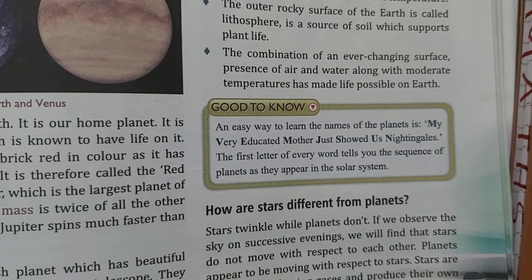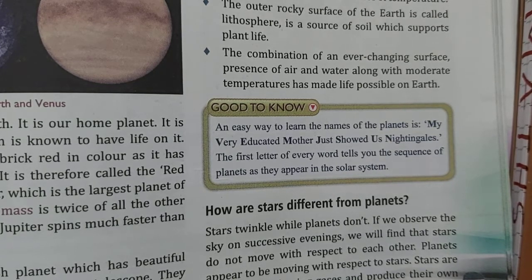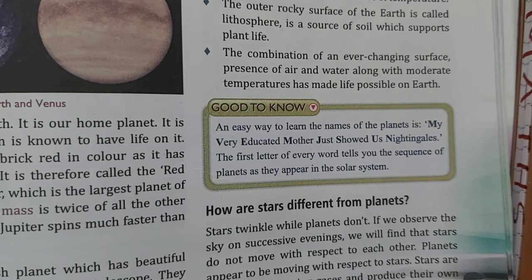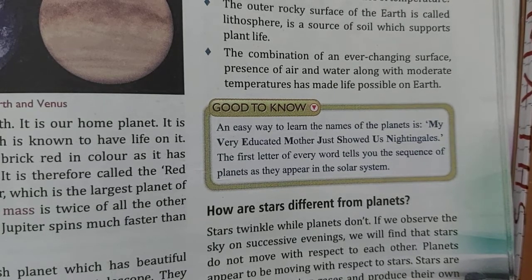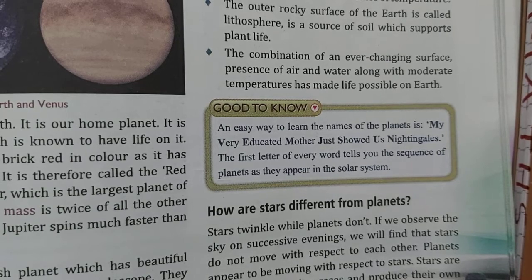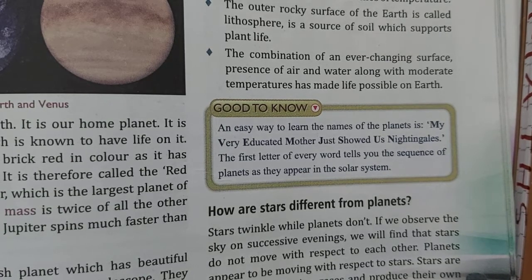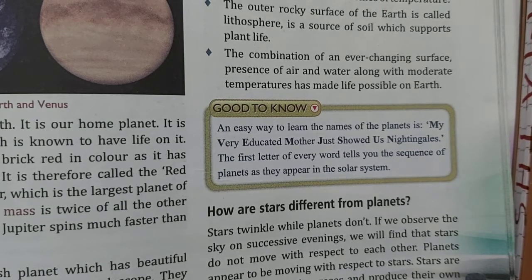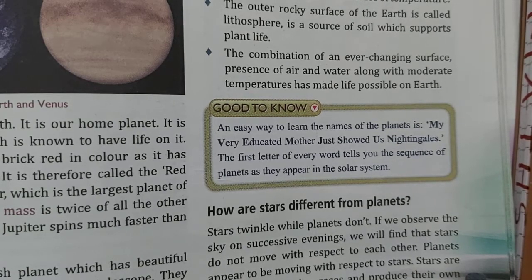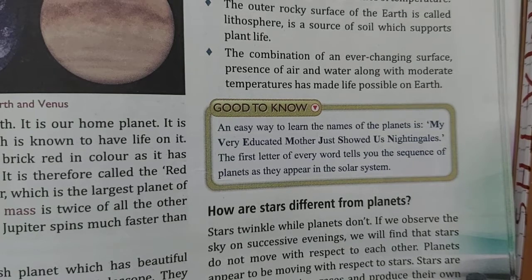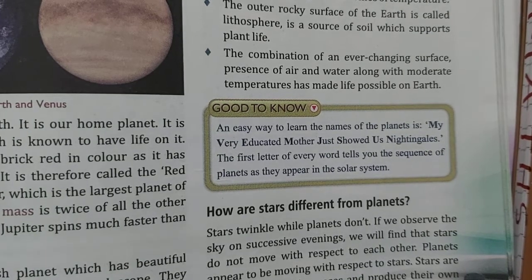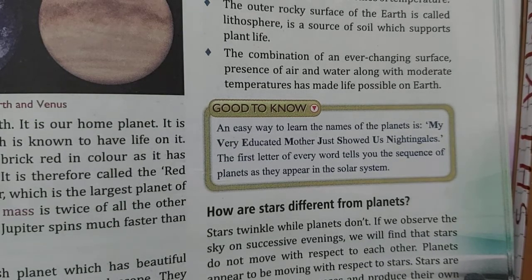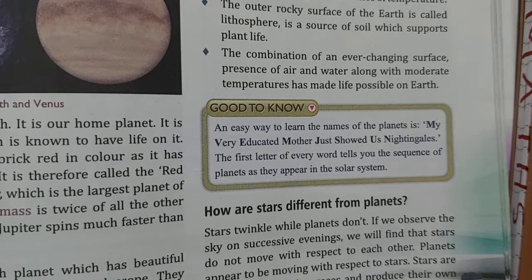In the solar system, the sun is at the center and there are 8 other planets which revolve around the sun. There are also some dwarf planets — these are very small planets that are not classified as full planets due to their size and other regional factors. Earlier there were 9 planets, but today there are only 8 planets in the solar system. All the planets move around the sun in a fixed elliptical path called orbits.